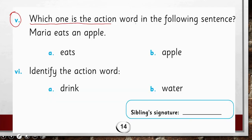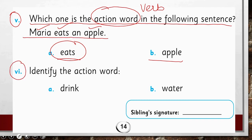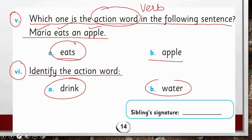Which one is the action word in the following sentence? Is jumle mein kaun sa word action word, yani verb hai, jisse pata chal raha hai ke kya ho raha hai? Maria eats an apple — Maria seb khati hai, kya kari hai woh seb ko? Kha rahi hai — eats ya apple? Kya action hai ismein? Eats. Very good. Number six: identify the action word — kya action hai, drink yani peena, ya action hai paani? Action hai drink.